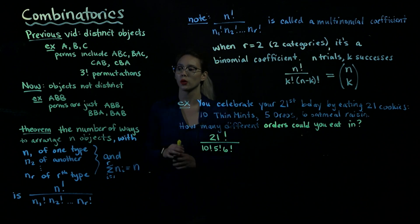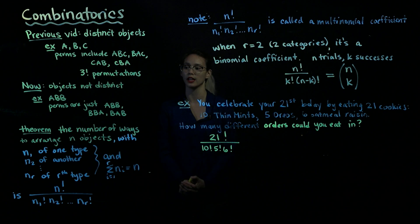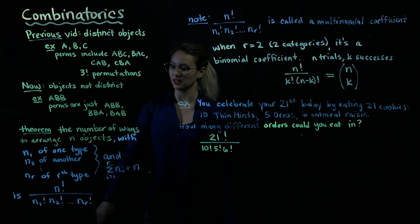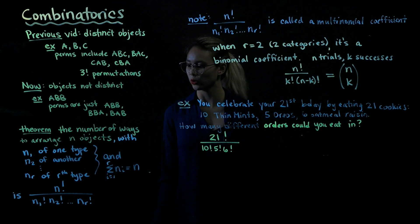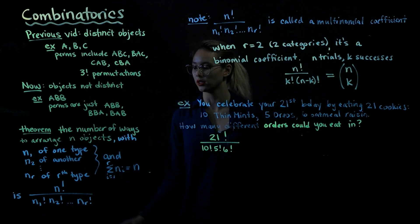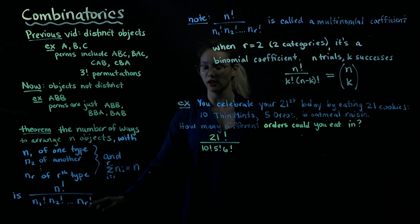So let's talk about a theorem. The number of ways to arrange n objects, assuming that we have n1 of one type, n2 of the next type, and then all the way down to nr of the rth type, is going to be n factorial divided by n1 factorial times n2 factorial times dot dot dot nr factorial.